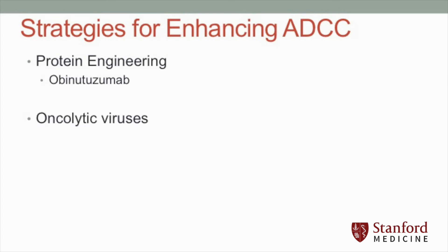Oncolytic viruses offer another approach for improving ADCC. Oncolytic viruses selectively kill and replicate within tumor cells but do not harm normal cells. Rayovirus, an oncolytic virus that kills tumor cells through selective replication in cells with an activated RAS pathway, has been shown to induce NK cell activation and lead to increased NK-mediated cytotoxicity.